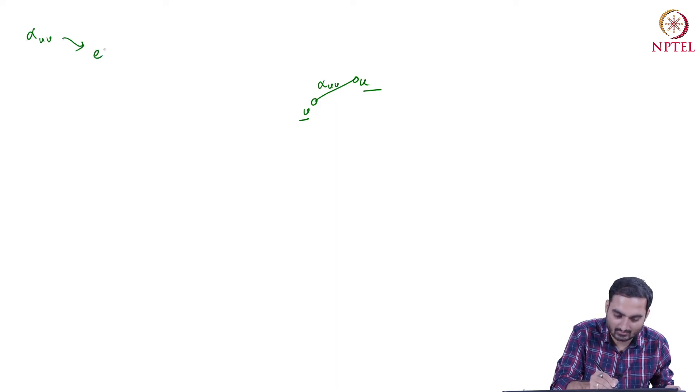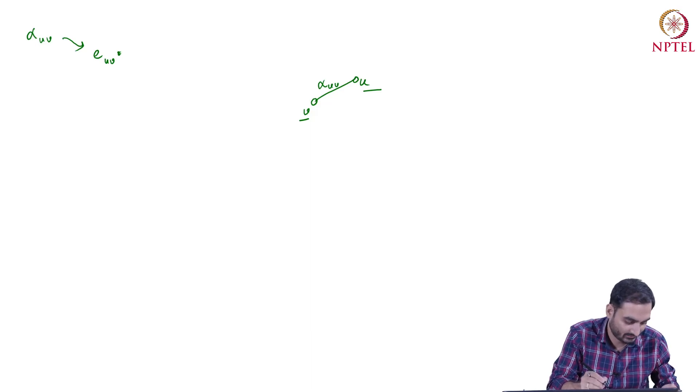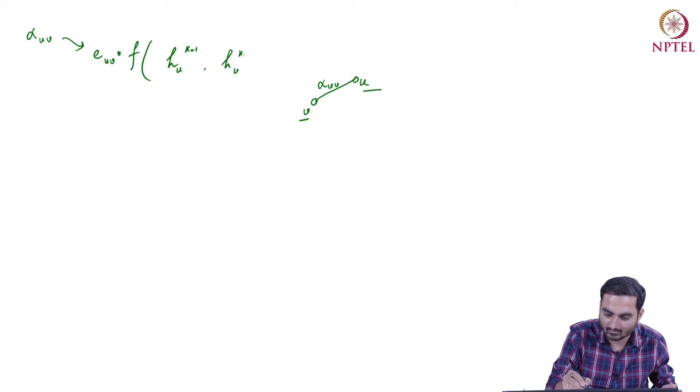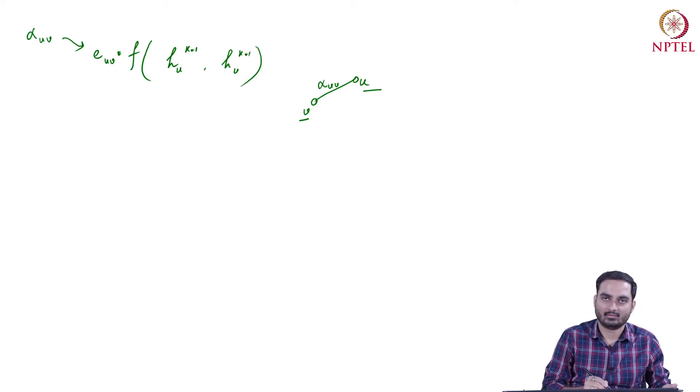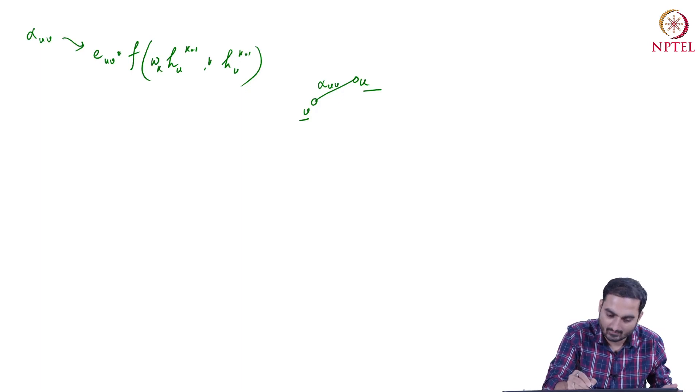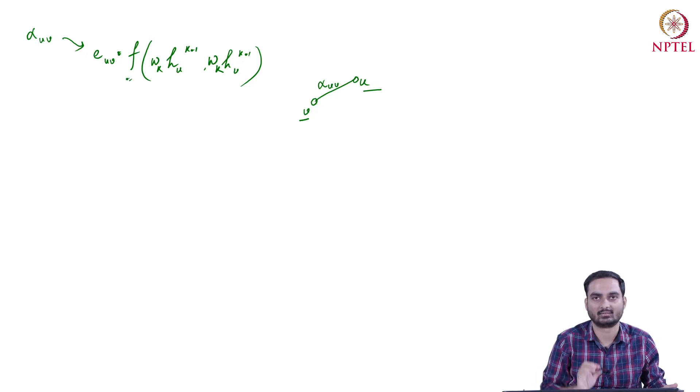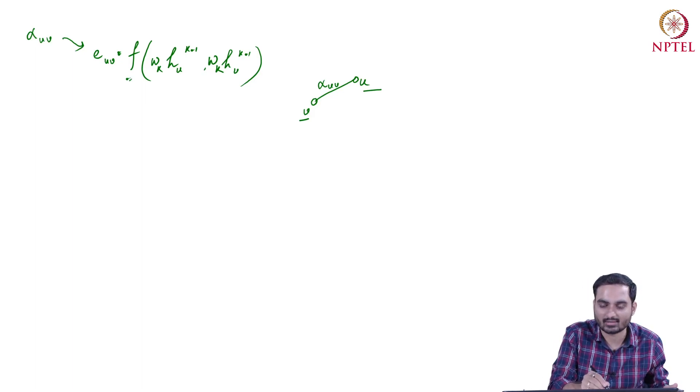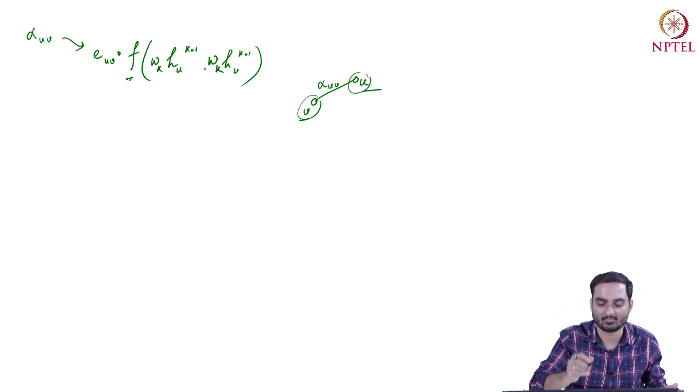Let us assume that, let us denote another variable e_uv. Now e_uv is basically a function f of h_u^{k-1} and h_v^{k-1}, and of course weights, say W^k. This function is something that we will discuss. You can take a set of functions.